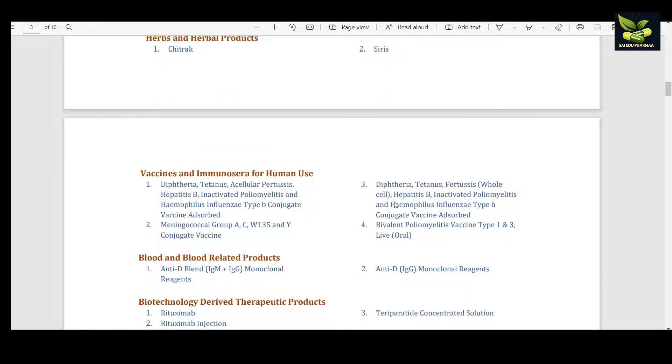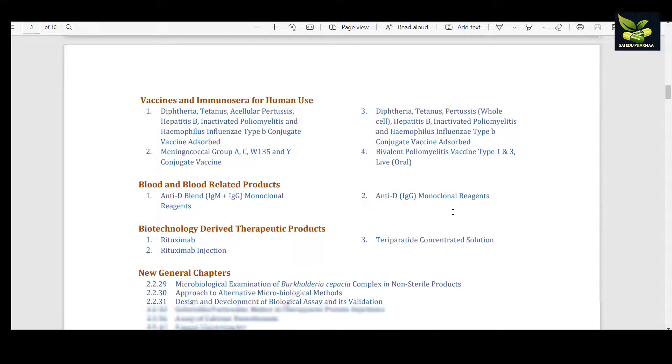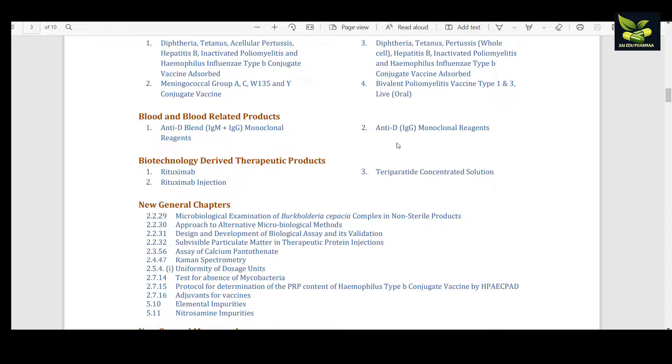These are four important vaccines and immunosera for human use. For blood-related products, two products are included: Anti-D blend, that is IgM and IgG monoclonal reagents, and Anti-D IgG monoclonal reagents.